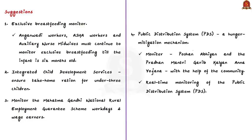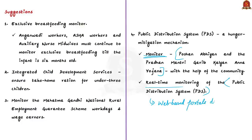The author also stresses monitoring existing schemes like the Poshan Abhiyan scheme and the Pradhan Mantri Garib Kalyan Anna Yojana scheme, which can be monitored with the help of the community. Another important suggestion is real-time monitoring of the Public Distribution System, which helps ensure food security at the household level. Only in a few states are web-based portals functioning that monitor the PDS system — these portals provide information about whether shops are open and whether the quantity and quality of dry rations is up to the mark.